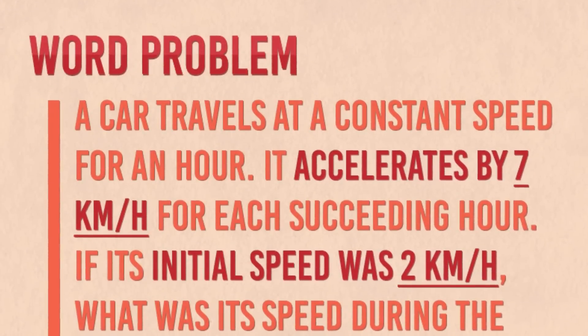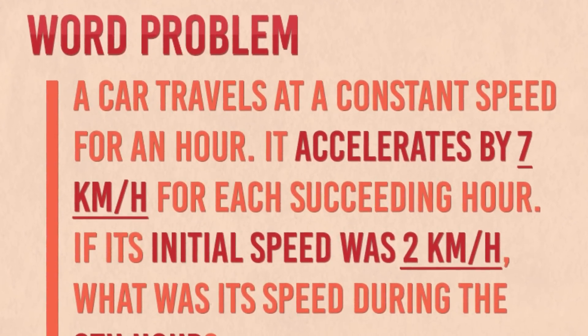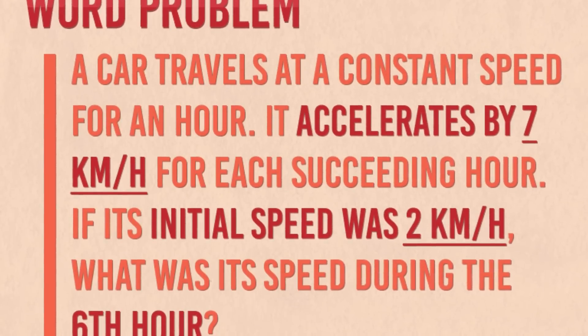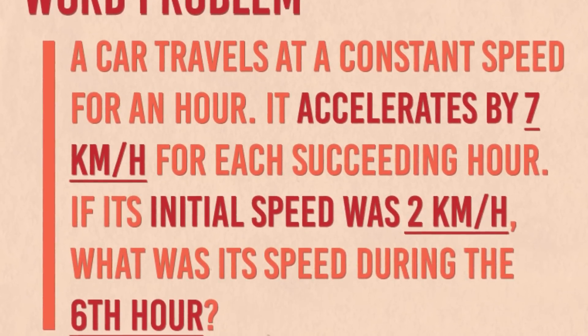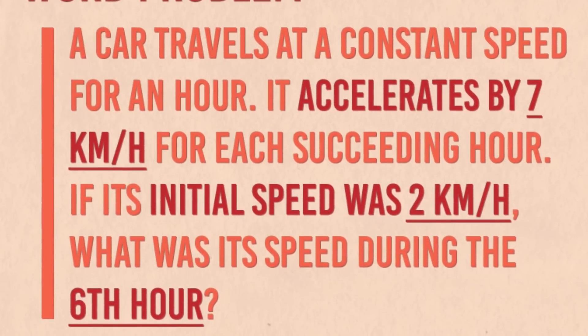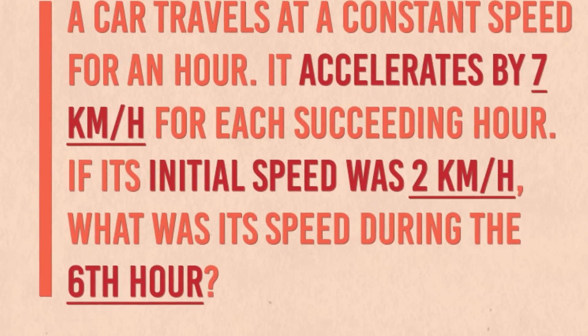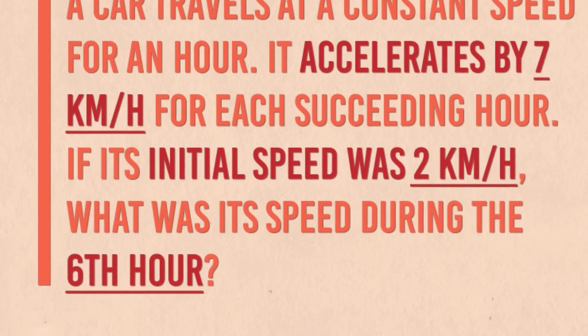Now you know how to solve the basic problems. Let us now try a word problem. A car travels at a constant speed for an hour. It accelerates by 7 kilometers per hour for each succeeding hour. If its initial speed was 2 kilometers per hour, what was its speed during the sixth hour?